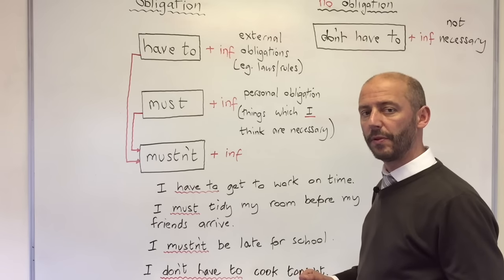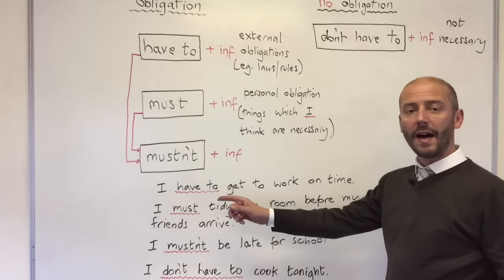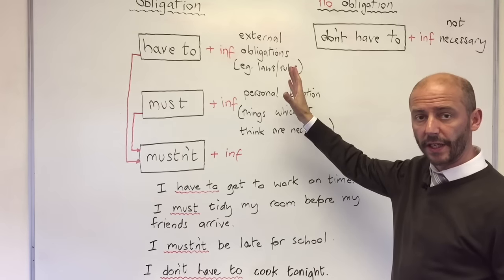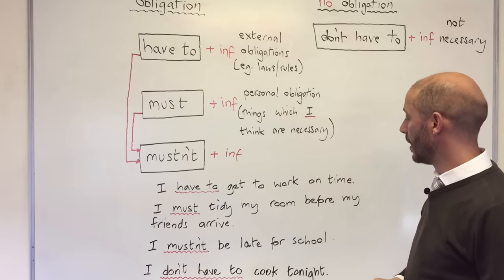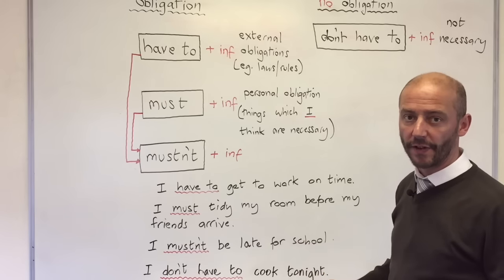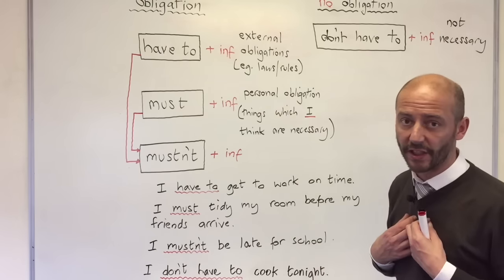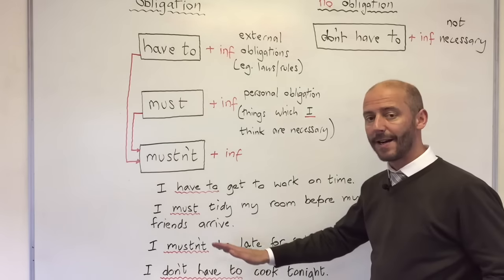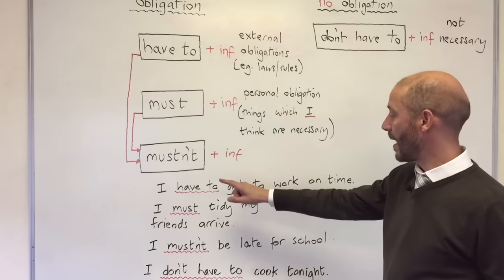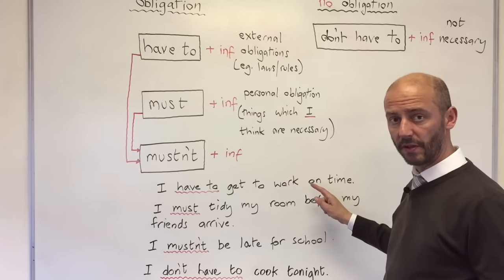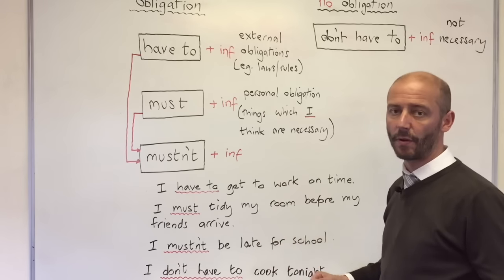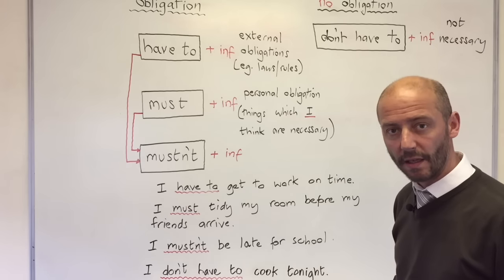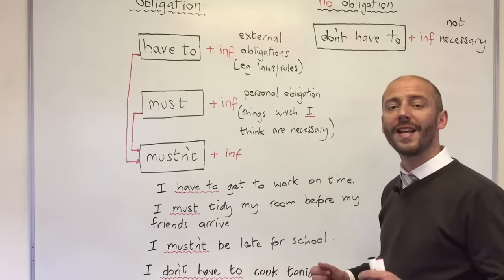So let's have a look at some examples together. I have to get to work on time — this is a general external obligation; this is my job. I must tidy my room before my friends arrive — this is a personal obligation; there's no law that says I have to, I want to. I mustn't be late for school — negative obligation. I don't have to cook tonight; we're getting a takeaway — it's not necessary for me to cook.